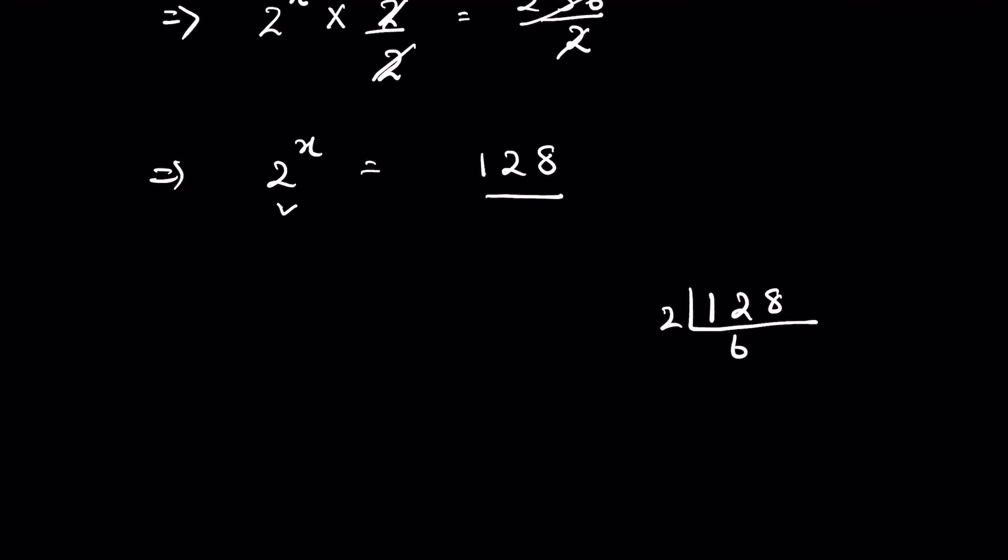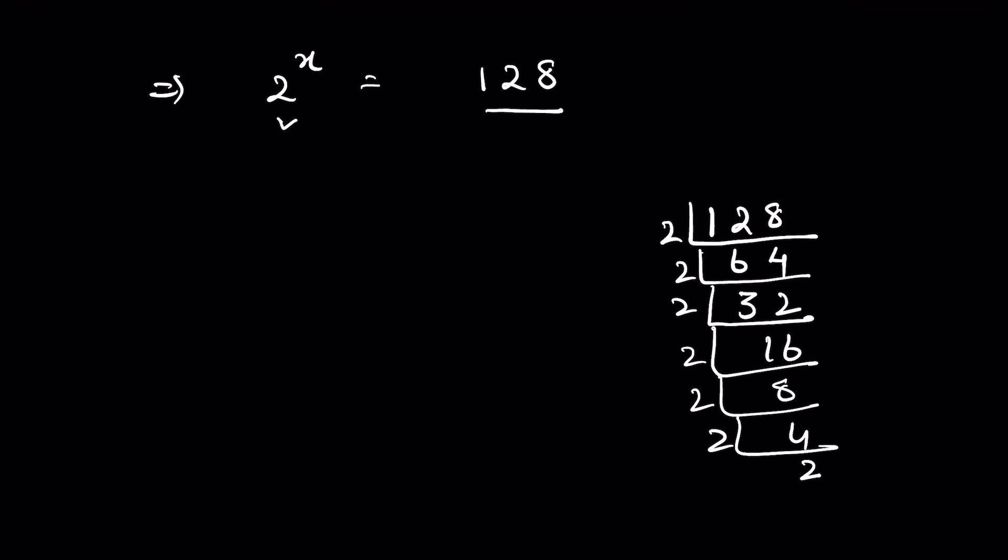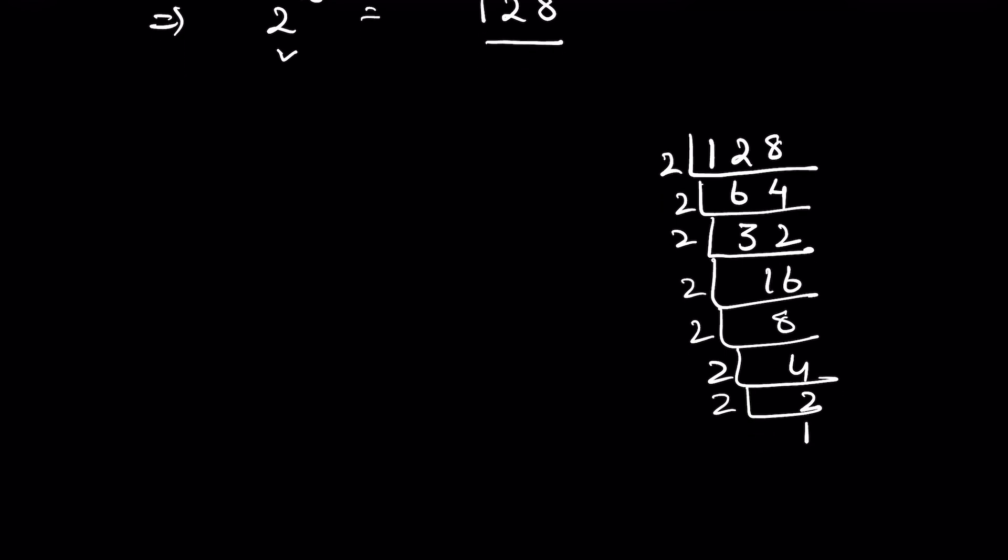2 times 64 is 128, 2 times 32 is 64, 2 times 16 is 32, 2 times 8 is 16, 2 times 4 is 8, 2 times 2 is 4, and 2 times 1 is 2. So the factors of 128 are 2.